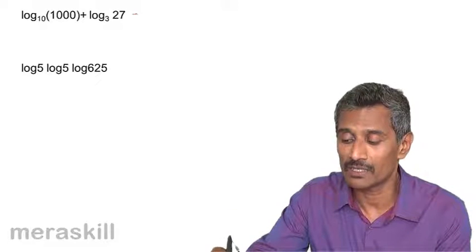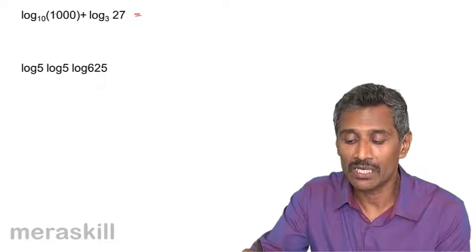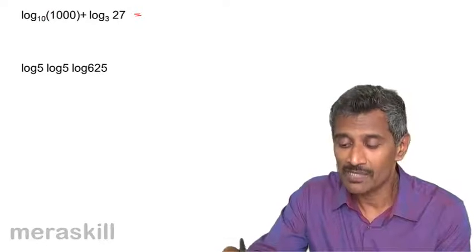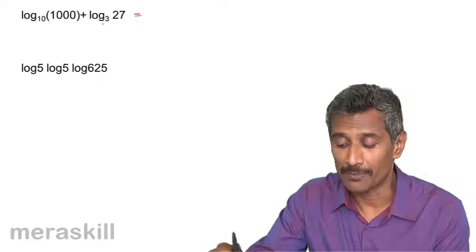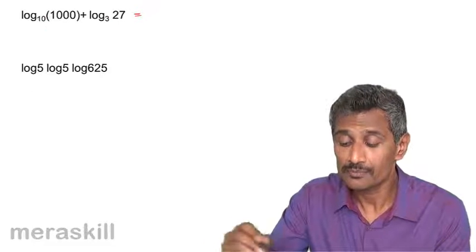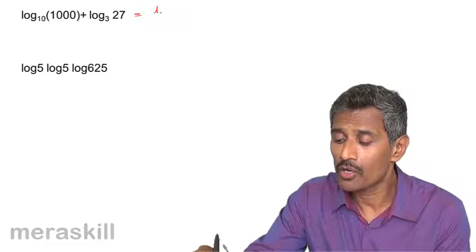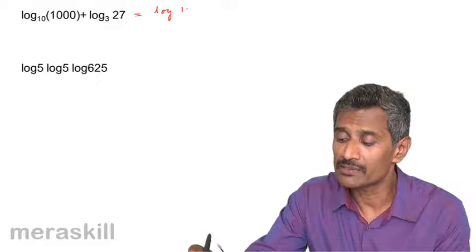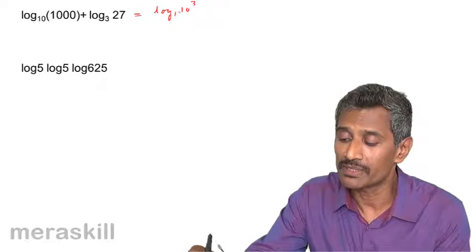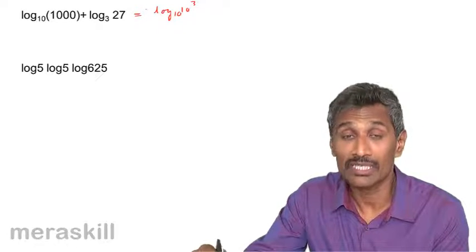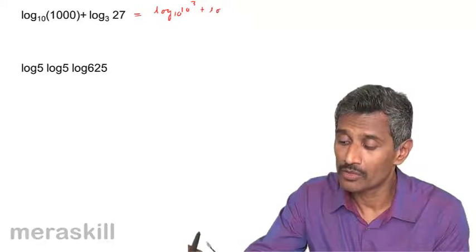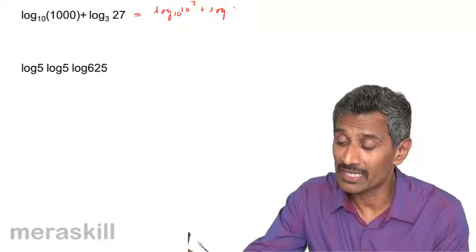Let's take this example: log of 1000 to the base 10 plus log 27 to the base 3. How do we do this? Log of 1000 can be written as log 10 cubed to the base 10. Log 27 can be written as log 3 cubed to the base 3.